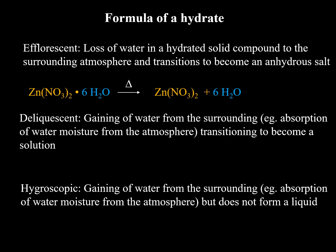So there are also some terms in the lab manual. Efflorescent is a loss of water in a hydrated solid compound, and that's what you'll be doing in the lab. You'll have a particular compound. This is your formula of the hydrate, and once you add some heat to your compound, obviously the water will come off. So this is the formula for an efflorescent type reaction.